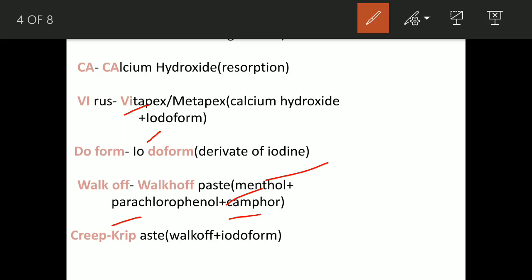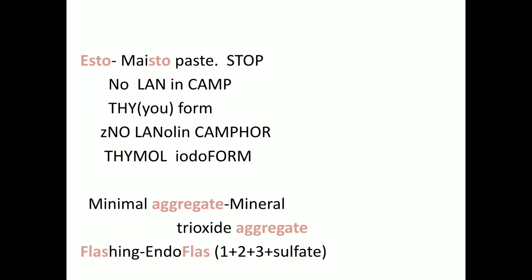Next, 'creep' — you can also write CREEP as KRIP, which means KRI paste. Since there is an 'I', it means iodoform. The composition is similar to Walkoff — menthol, camphor, and parachlorophenol — plus iodoform.